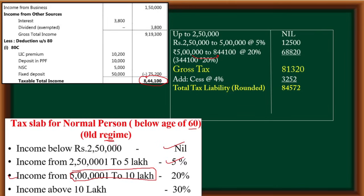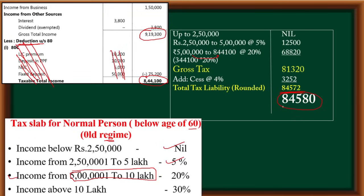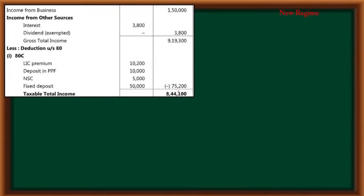Now we'll see the same under new regime. In new regime we have to remove all deductions because new regime does not allow deductions. So directly we look at the gross total income of 9,19,300. Round this figure — 572 rounds to 58. We'll show our knowledge to the paper checker by rounding the figure correctly. Now let's see from the new regime again.